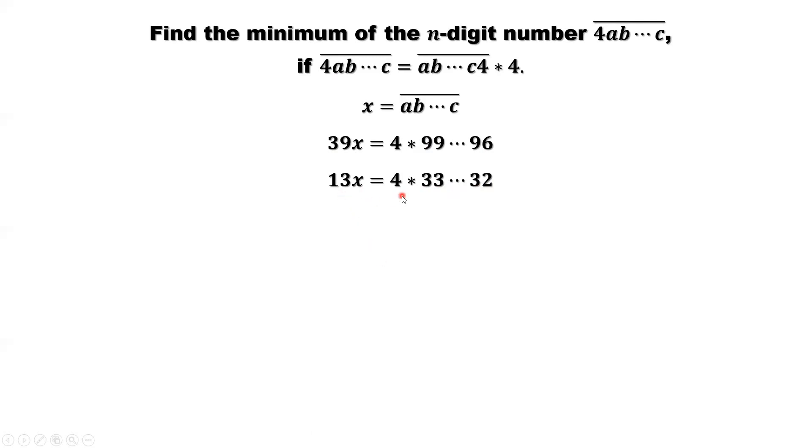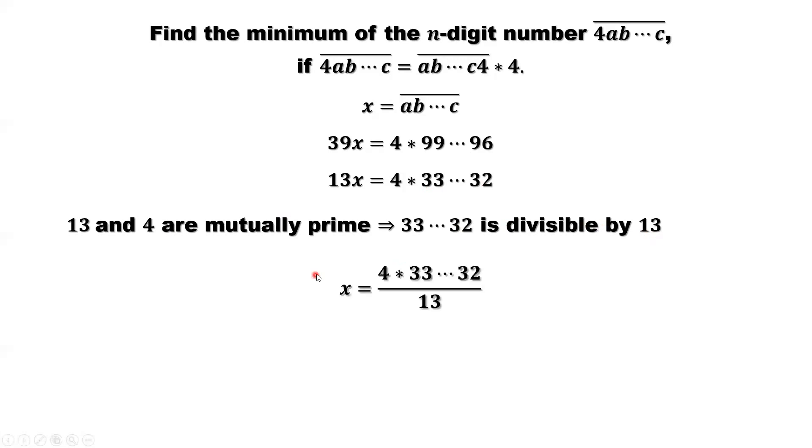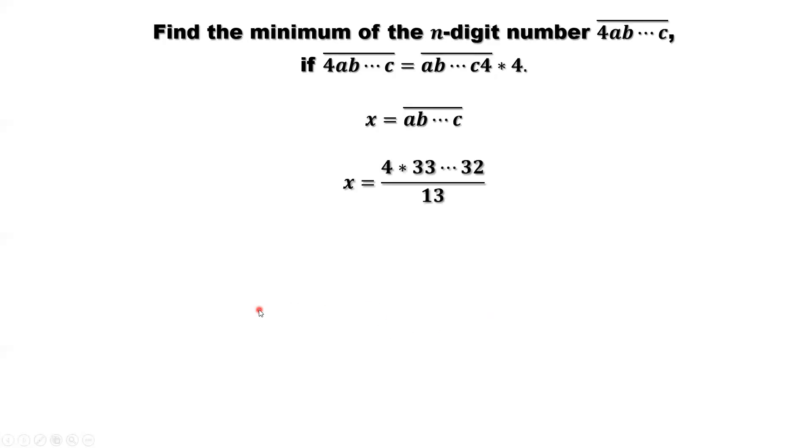13 and 4 are mutually prime, so we can imply the second part, this number, is divisible by 13. From here we can see that because X is an integer, 4 is not divisible by 13, so the second part must be divisible by 13. The minimum number of the second part divisible by 13 is 33332.